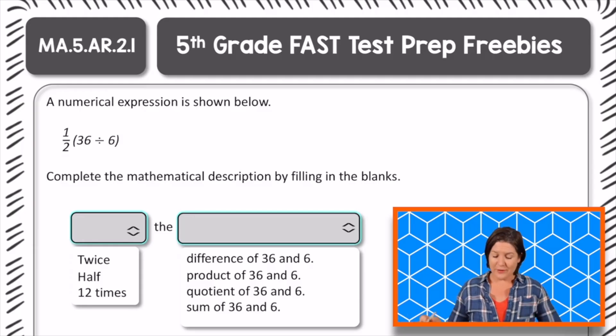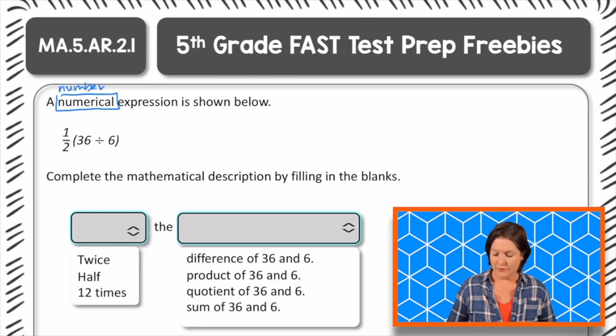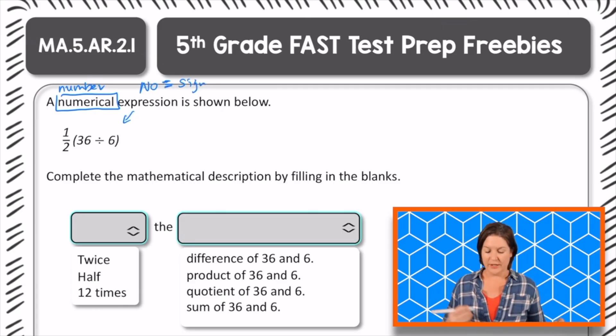Welcome back, 5th grade. Okay, this one says that a numerical expression, those are fancy words. Numerical means that we have numbers involved, and expression means that we're talking about something that doesn't involve the equal sign, no equal sign, as you can see. A numerical expression, an expression with numbers is shown below. We see 1 half, and then inside of parentheses, 36 divided by 6.